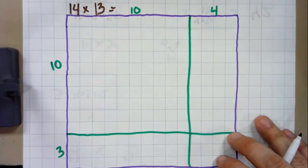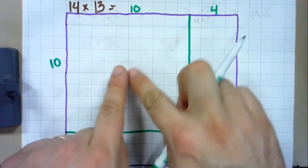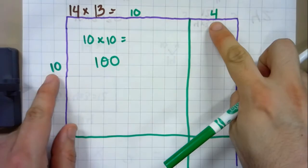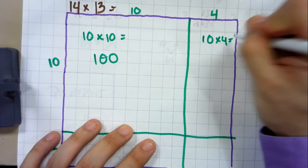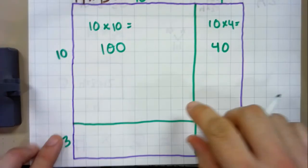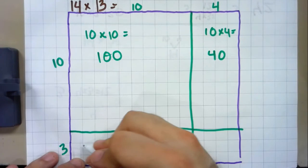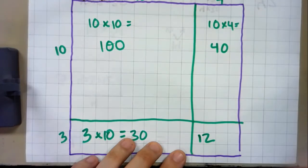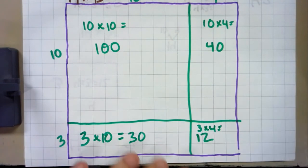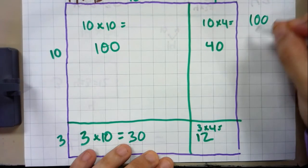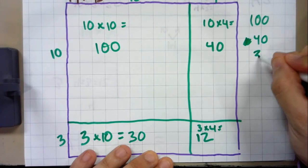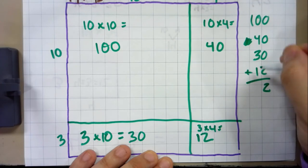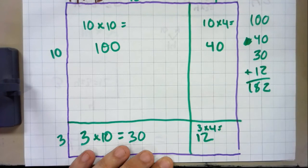So I can multiply those parts: 10 times 10 equals 100, 10 times 4 equals 40, 3 times 10 equals 30, and 3 times 4 equals 12. Then I just add them all up: 100 plus 40 plus 30 plus 12 equals 182.